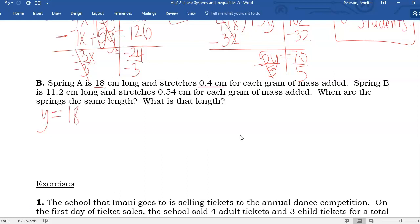And it increases at a rate of 0.4 centimeters per gram added. Spring B starts at 11.2, and it increases 0.54 centimeters per gram added. Since I have two Y equals MX plus B equations, I could graph them or use substitution. I'm going to go ahead with substitution since I don't want to try to do with graph paper.